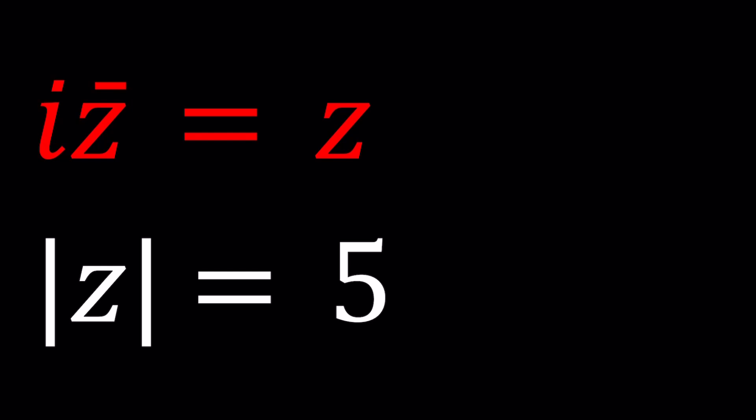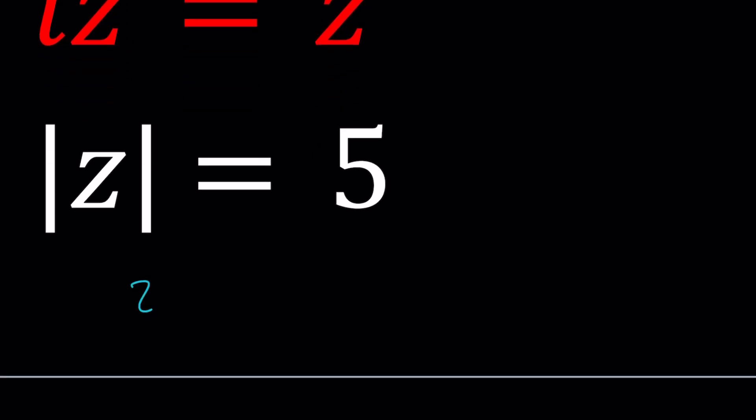So I'm going to replace z with a plus bi in both of these equations. The second one is a little easier. The square root of a squared plus b squared equals 5, which gives me a squared plus b squared is equal to 25. This is great because I got some information about a and b, the real and imaginary parts of z.